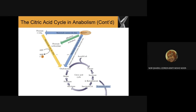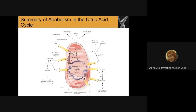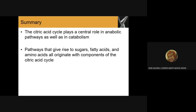Glutamate will later be used to produce small amino acids. This more extensive figure also includes gluconeogenesis, fatty acid metabolism, amino acid biosynthesis, and how these can be transformed to produce pyrimidines, lysine, threonine, and other amino acid types. To summarize the citric acid cycle: it plays a central role in anabolic pathways as well as in catabolism, giving rise to sugars, fatty acids, and amino acids that all originate from components of the TCA cycle itself.